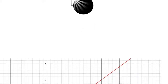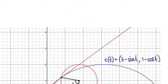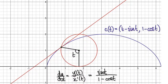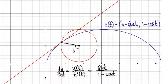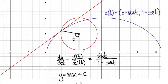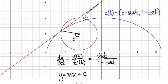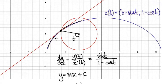In this video, we're going to come up with the equation of the tangent line of a cycloid. Here you've got your cycloid, and this is our tangent line here — it just touches the cycloid. So the cycloid is here, and the tangent line just touches it.